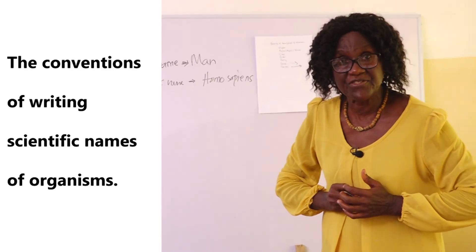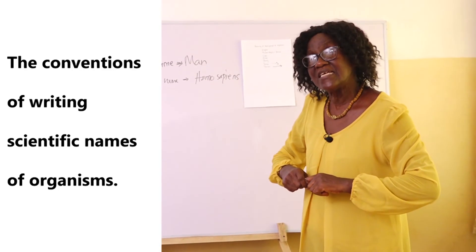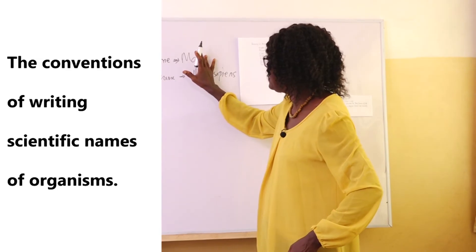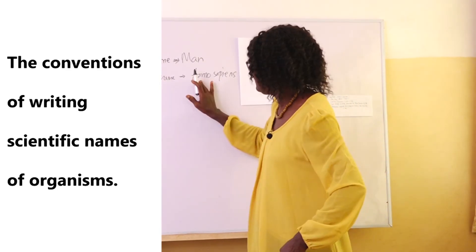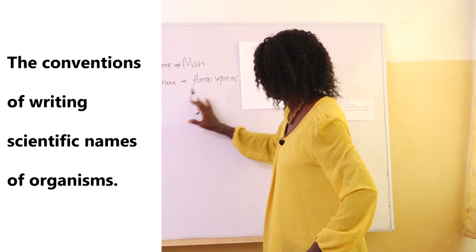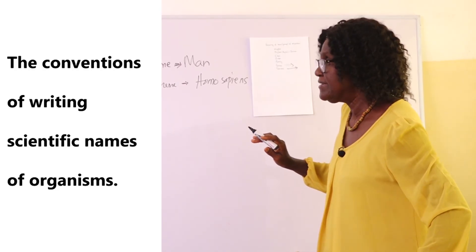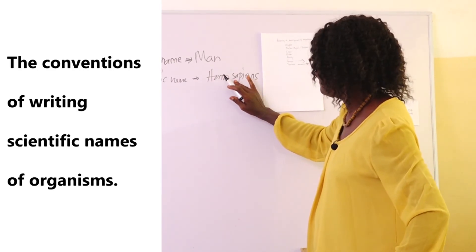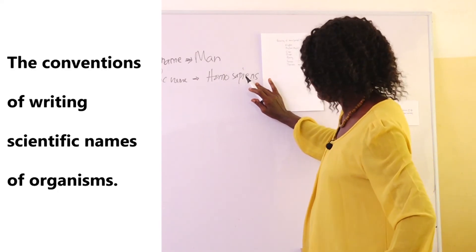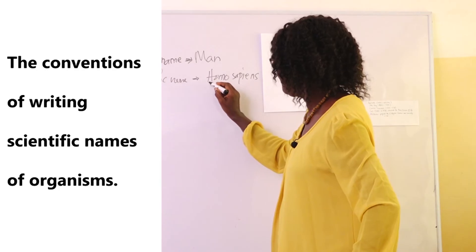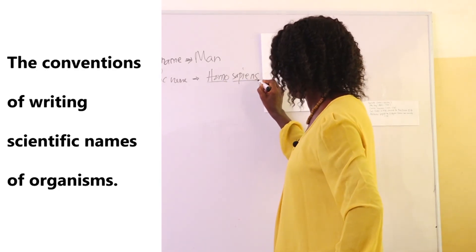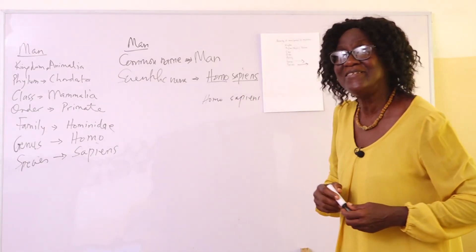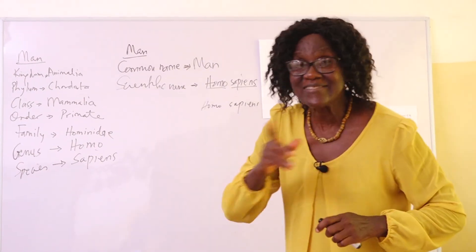There are conventions for writing scientific names. The genus is written first with a capital letter, and the species name is written second with a small letter — so Homo sapiens. Each name must either be underlined separately or written in italics. These are how scientific names are written and where they come from — right from the kingdom.